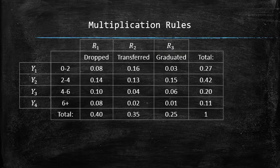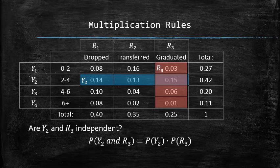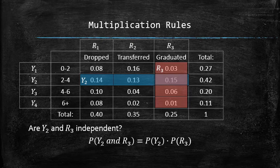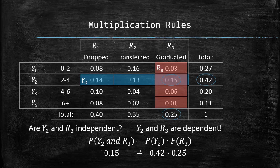Using the special multiplication rule, we can verify whether two events are independent or not. For example, in the following contingency table, consider events Y2 and R3, and let's check whether they are independent. If they were independent, then the special multiplication rule would hold — that is, the probability of Y2 and R3 would equal the product of the probability of Y2 by the probability of R3. The left-hand side is the joint probability of Y2 and R3, which is 0.15, and the right-hand side is the product of the marginal probabilities of Y2 and R3. It is easy to verify that the two sides are not equal to one another. Therefore, the events are dependent.